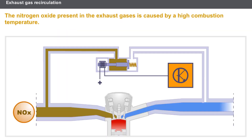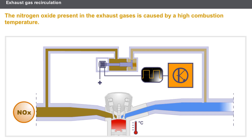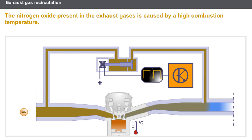Nitrogen oxides present in the exhaust gases are caused by high combustion temperature. The EGR valve is controlled by a modulated pulse current (RCO). By sending exhaust gases which have already been burnt back into the inlet manifold, the quantity of oxygen involved in combustion is reduced, and therefore the combustion temperature is lower.